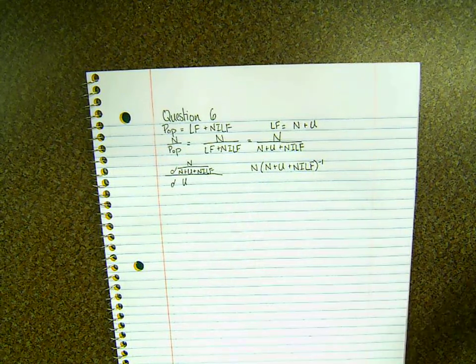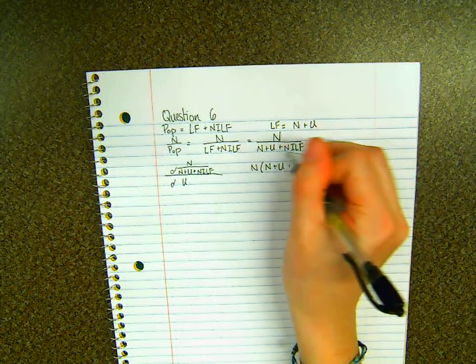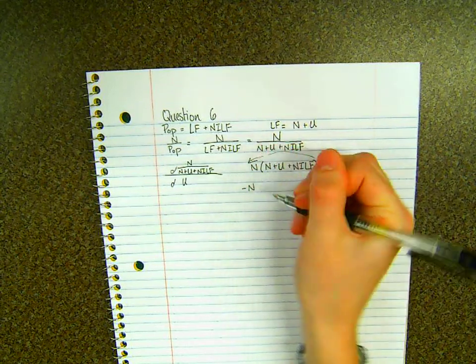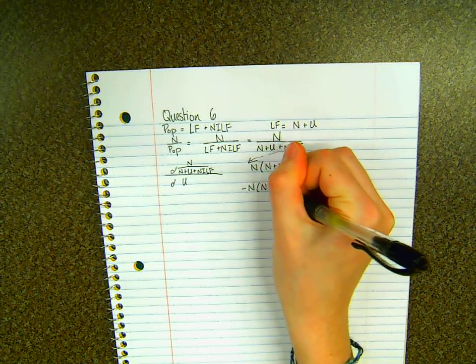You are going to move this to the front, so it's going to be negative N times N plus U plus NILF...